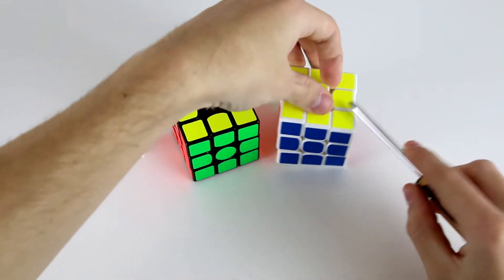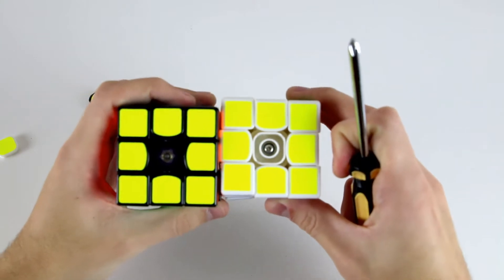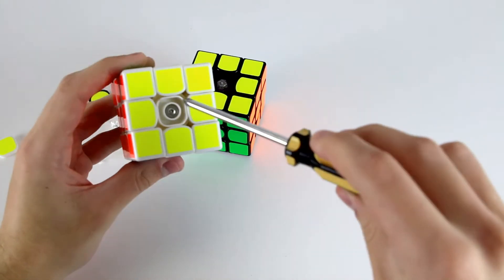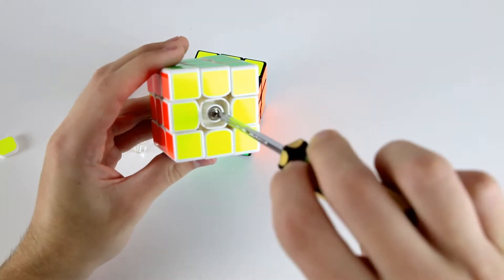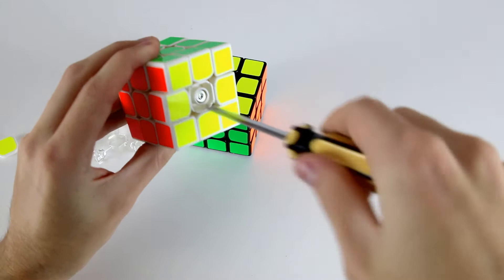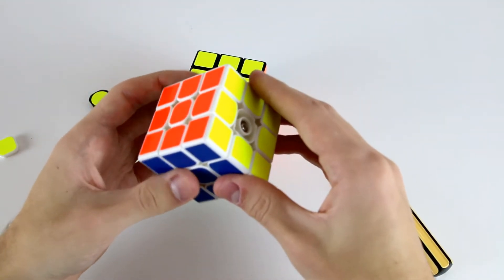You'll notice that there'll be some sort of screw or other mechanism underneath the center piece and what you can do is actually adjust this to become tighter or looser. So here in this one we can turn this clockwise to tighten the cube and once we do that you'll actually feel that the layer is a little bit tighter and requires a little bit more force to move.